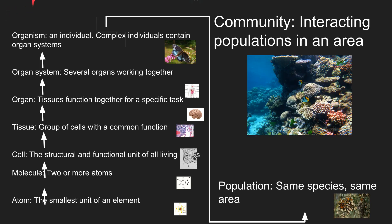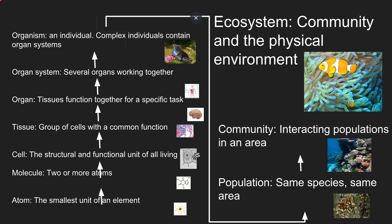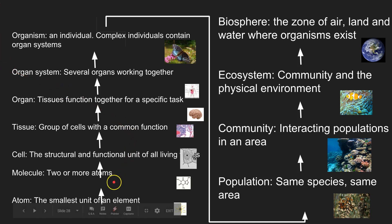A community is a group of interacting populations in an area — for example, a coral reef. An ecosystem is the community comprised of those populations plus the physical environment. And then you have the biosphere, which is the zone of air, land, and water where all organisms exist. Hopefully you can see this hierarchical organization where each level leads to or is made up of the one before it.